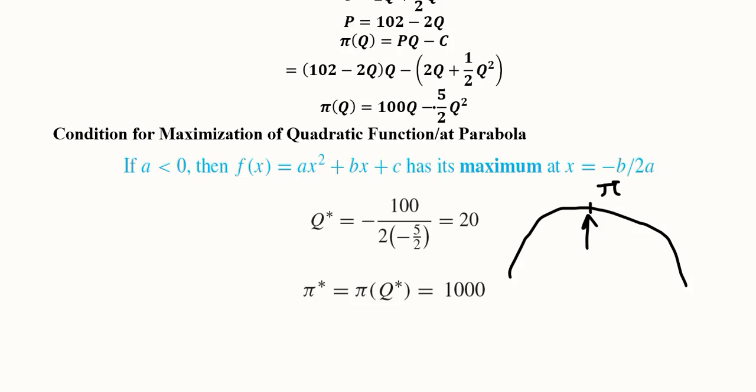At this point we use the value of b and a. The value of b is 100 and the value of a is minus 5 over 2. We put these values here: 100 over 2 times a with a minus sign, so the answer will be 20. This gives us the equilibrium value of output that the monopolist should produce to maximize profit.